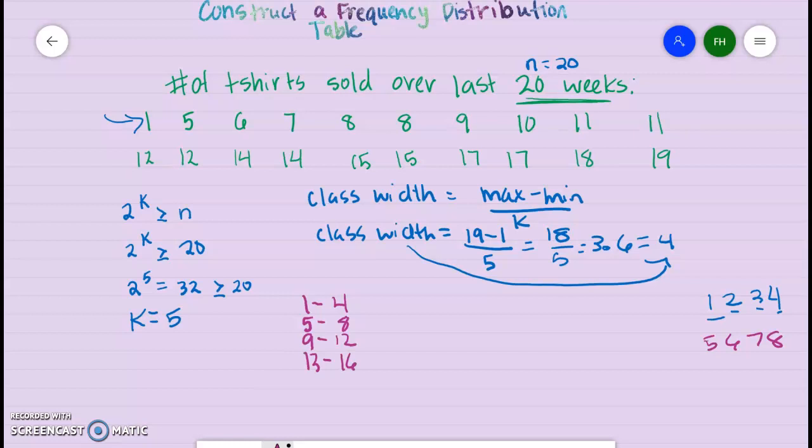We have 1, 2, 3, 4 classes. Remember, we've got to have 5 classes. Why do we know we need another class? Because we still have some more numbers we haven't gotten to. So 17 to 20. 9 to 12, 13 to 16, and then 17 to 20.